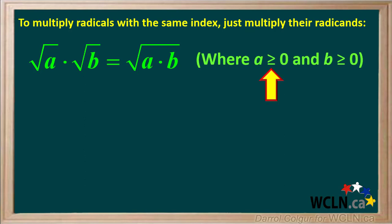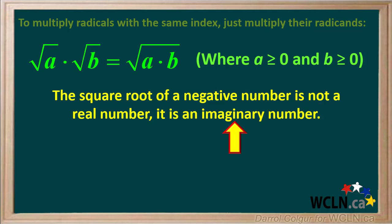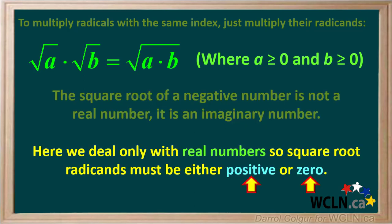We specify that a is greater than or equal to zero and b is greater than or equal to zero, because the square root of a negative number is not a real number — it is something we call an imaginary number. Here we deal only with real numbers, so square root radicands must either be positive or zero, never negative.